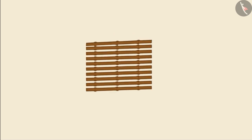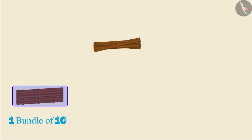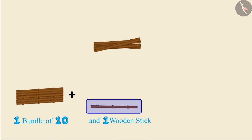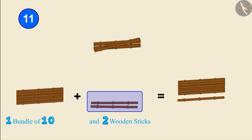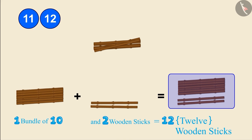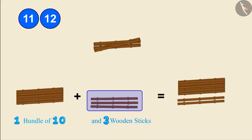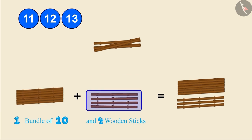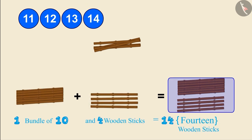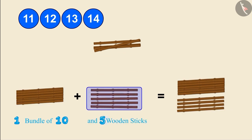One bundle of 10 and one more wooden stick make 11 wooden sticks. One bundle of 10 and two wooden sticks make 12. One bundle of 10 and three wooden sticks make 13. One bundle of 10 and four wooden sticks make 14. One bundle of 10 and five wooden sticks make 15 wooden sticks.